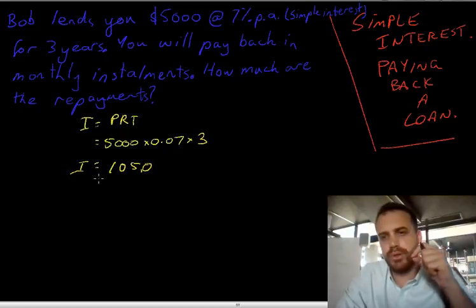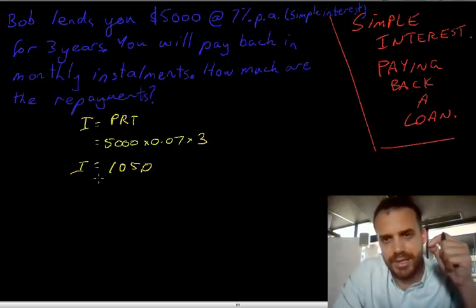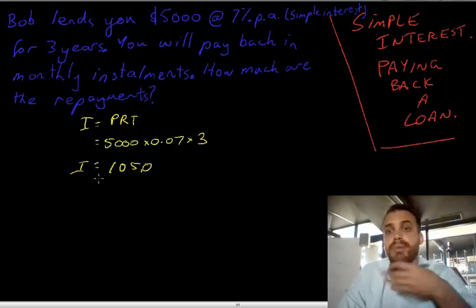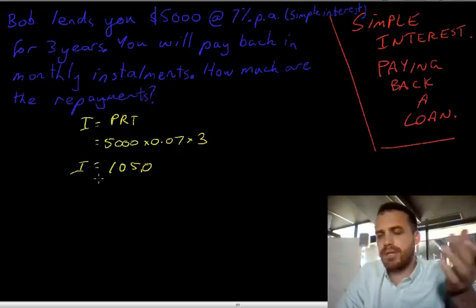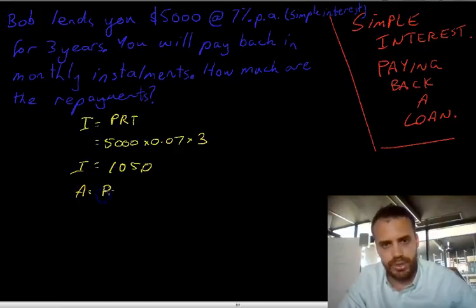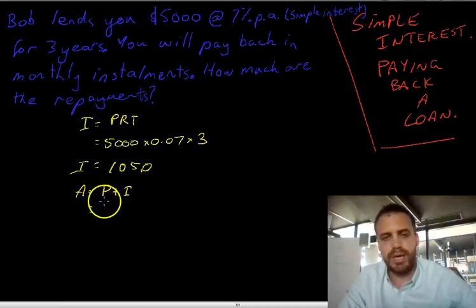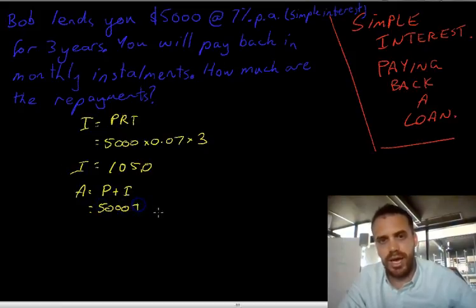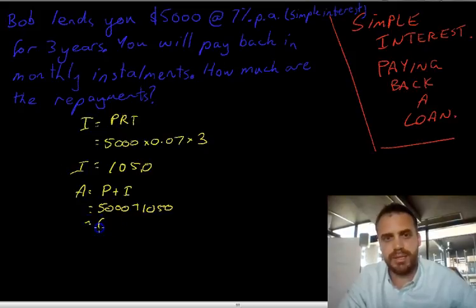You need to stop here, because this is a point where a lot of people make a mistake. A lot of people will say, okay, I need to pay him back $1,050. Well, Bob's getting a raw deal there. You have to pay him back all of the money — the principal and the interest. So you have to pay him back the original $5,000 that he lent you, and you have to pay him back the $1,050.